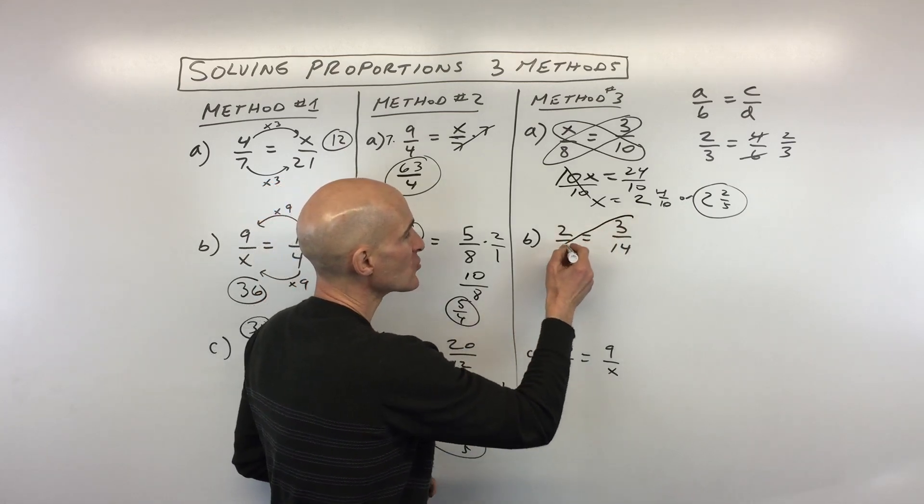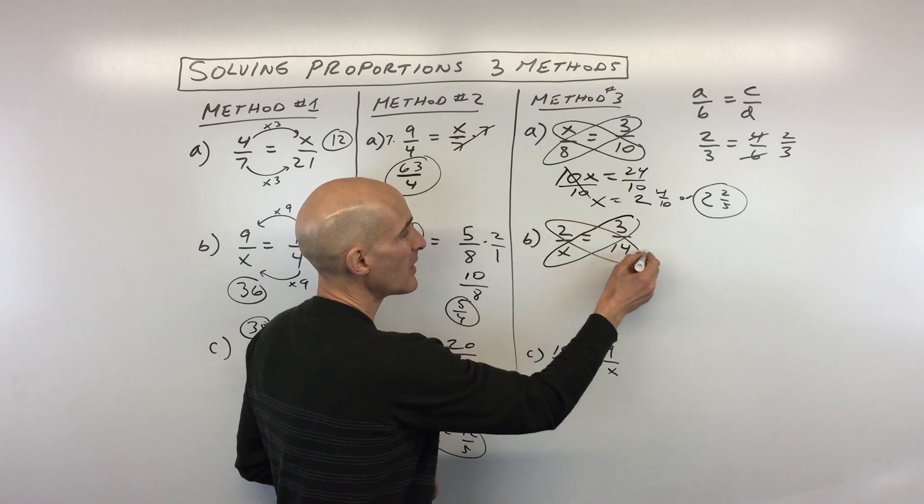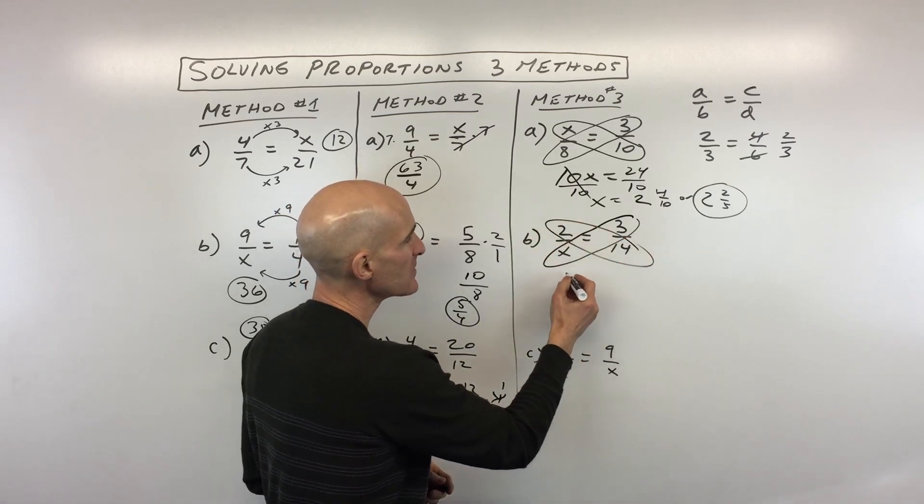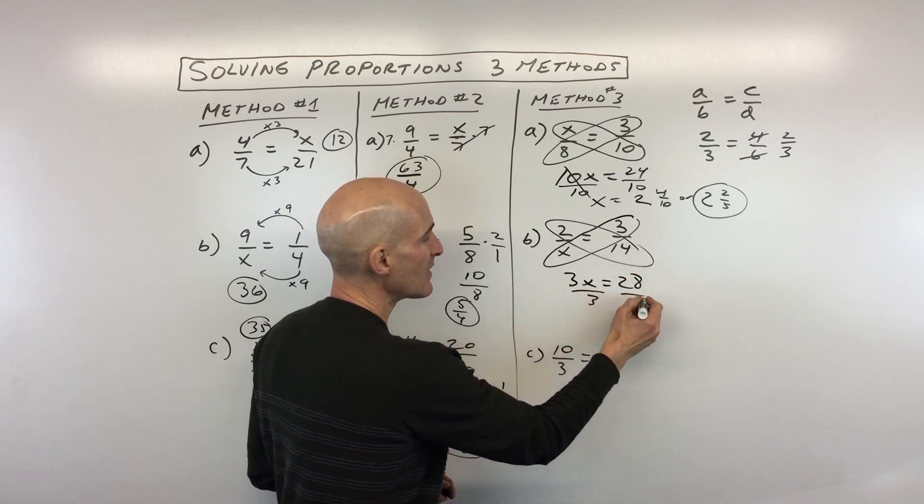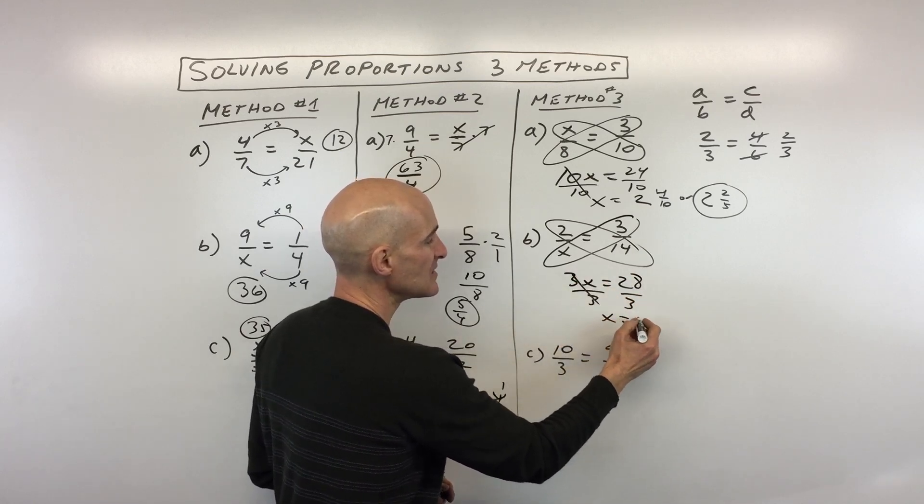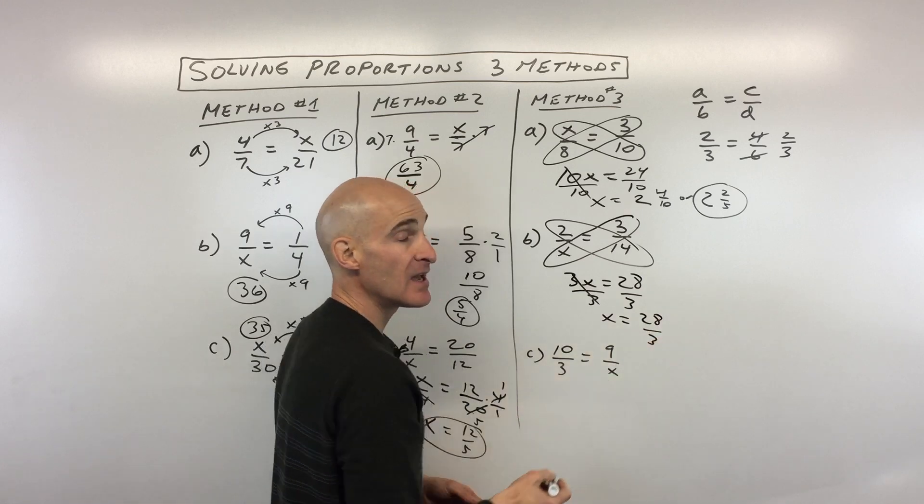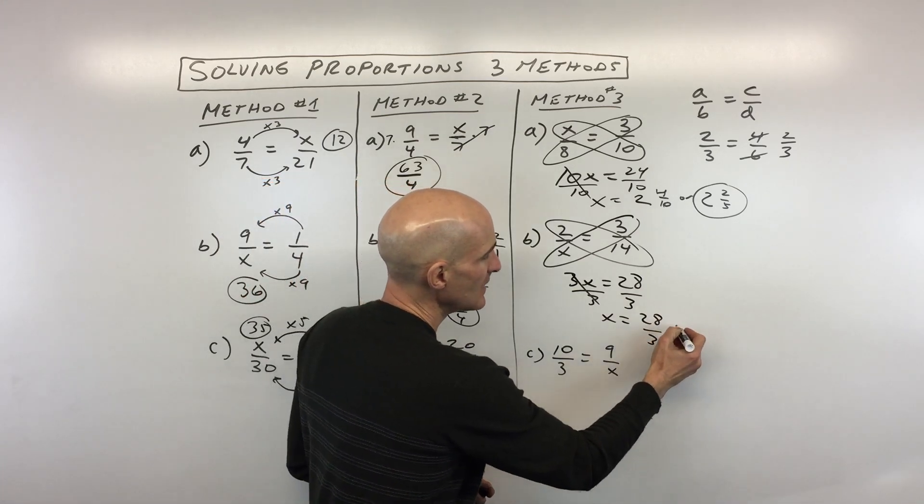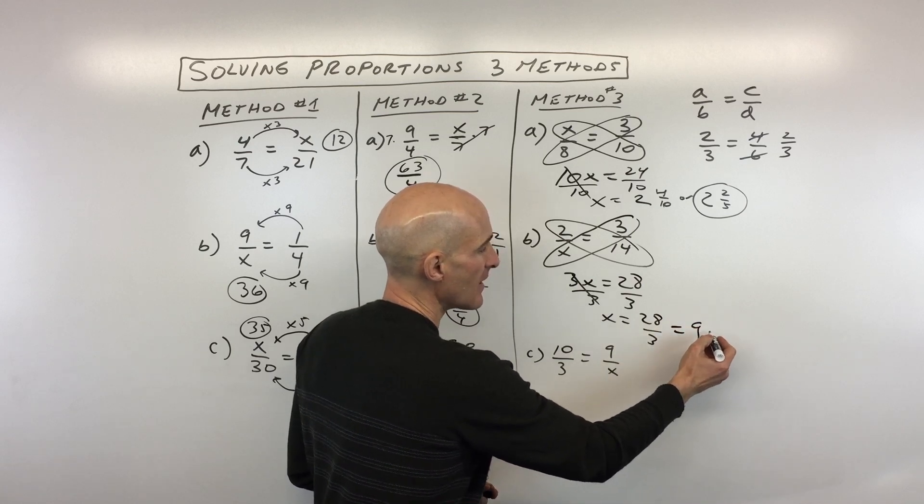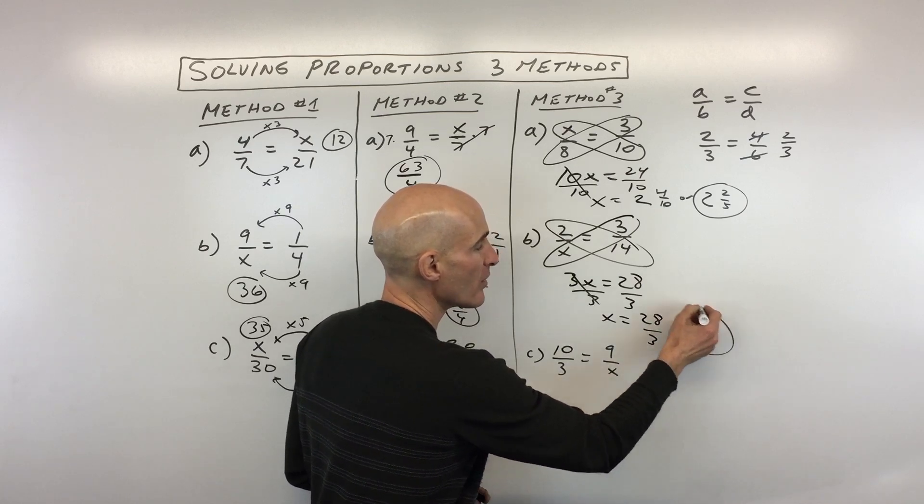Okay, so here what I'm going to do again is cross multiply. So that diagonal multiply together equals that diagonal multiply together. So we've got 3x equals 28. Divide both sides by 3. Okay, and you can see x equals 28/3. And if you want, you can write it as a mixed number. 3 goes into 28 how many times? Let's see, 9, that's 27 with 1 left over. So 9 and 1/3.